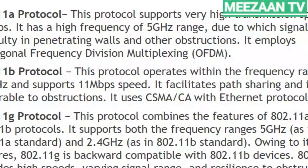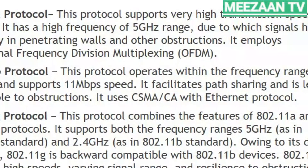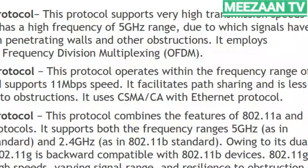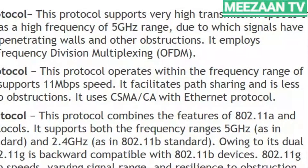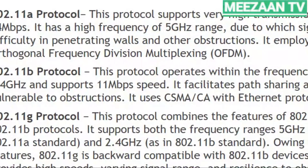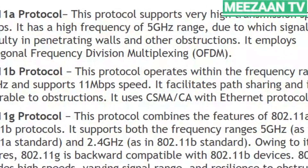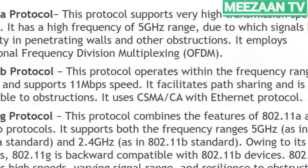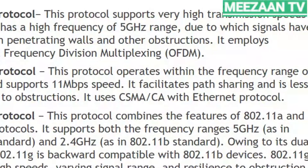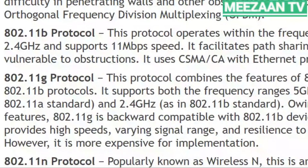There are many variations of 802.11. The 802.11a protocol supports a very high transmission speed of 54 Mbps with a frequency of 5 GHz, but signals have difficulty penetrating walls and obstructions. It uses OFDM at the physical layer. The 802.11b protocol operates in the 2.4 GHz frequency range and supports 11 Mbps. It facilitates path sharing, is less vulnerable to obstructions, and uses CSMA/CA with Ethernet protocol.